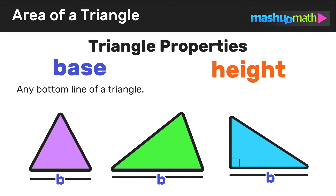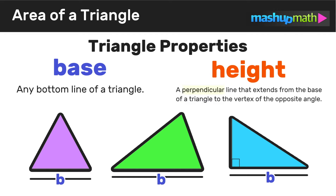The height of any triangle is a perpendicular line that extends from the base of a triangle to the vertex of the opposite angle. The height is a line that runs from the base forming a right angle with the base, and it extends all the way to the vertex of the opposite angle — the angle directly across from the base.